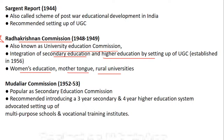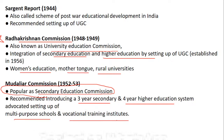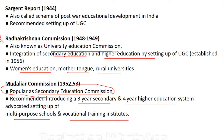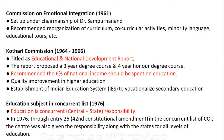Mudaliar Commission, popularly known as the Secondary Education Commission — this was a previous year question. It recommended introducing a three-year secondary and four-year higher education system, setting up higher education with a viewpoint of multi-purpose schools and vocational training. Note: vocational training was also highlighted by Wood's Dispatch pre-independence and Mudaliar Commission post-independence.